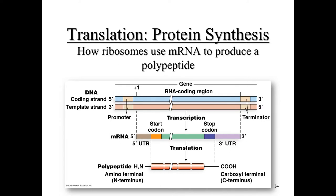We've been talking about proteins but still haven't discussed how polypeptides are formed in regards to the flow of genetic information. The final step in creation of proteins from DNA is what's called translation. Translation is RNA-directed synthesis of a polypeptide — in short, protein synthesis. It's also how ribosomes utilize your mRNA to produce a polypeptide. The mRNA created from transcription is translated into your polypeptide.